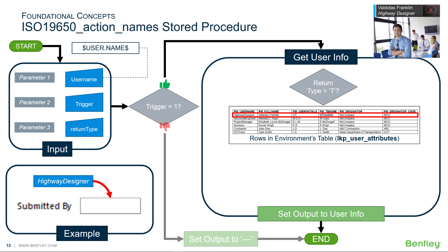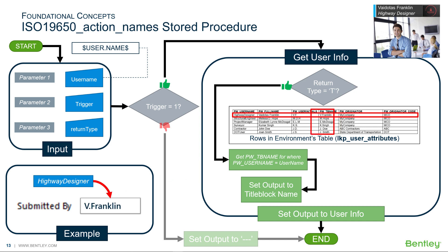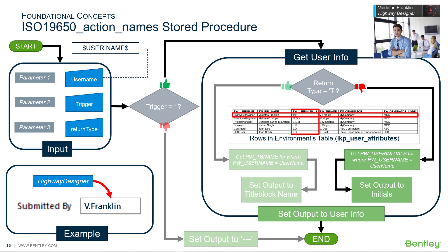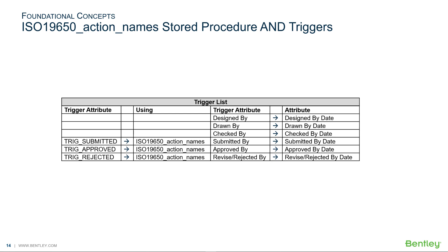Parameter three denotes the type of information to return. It will either result in the title block name from the lookup table or the user's initials from the lookup table. If the return type is set to T, then the return value is the corresponding title block name of the user. If the return type is not set to T, then the return value is the corresponding initials of the user. When we execute the stored procedure, we have the username and can hard code the return type. However, we need a corresponding trigger attribute for each of the target attributes. Therefore, we will add three additional attributes to trigger the submitted by, approved by, and revised rejected by attributes to use with the ISO 19650 action names stored procedure.